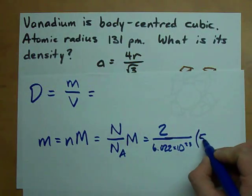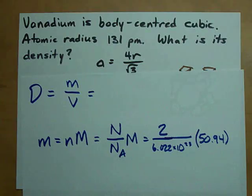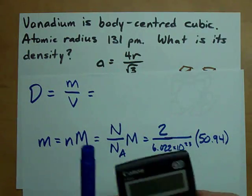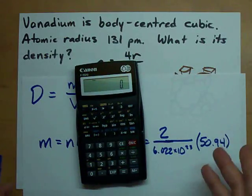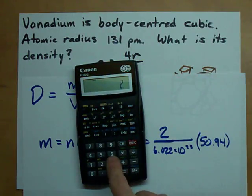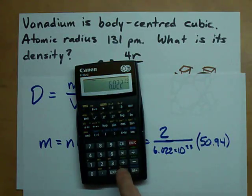This ends up giving us the fact that exactly 2 atoms of vanadium weigh 2 divided by 6.022 times 10 to the exponent 23, times 50.94.